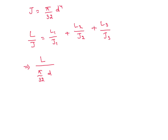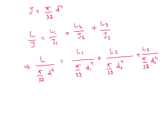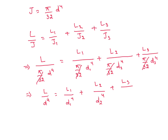Substituting J equal to pi by 32 D to the power 4, we get: L1 by (pi by 32 D1 to the power 4) plus L2 by (pi by 32 D2 to the power 4) plus L3 by (pi by 32 D3 to the power 4). Pi by 32 cancels, and then we get L by D to the power 4 equal to L1 by D1 to the power 4 plus L2 by D2 to the power 4 plus L3 by D3 to the power 4.